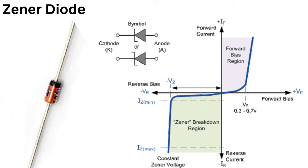Zener diodes have a wide range of applications, including voltage regulation, voltage stabilization, and overvoltage protection. They are often used in power supplies, voltage regulators, and other electronic circuits where a constant voltage is required.